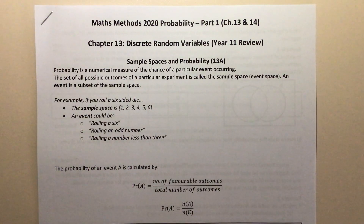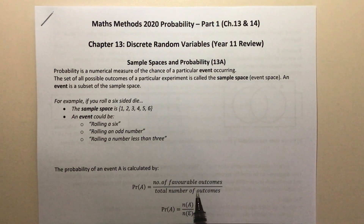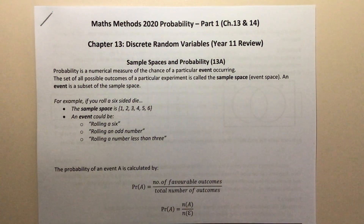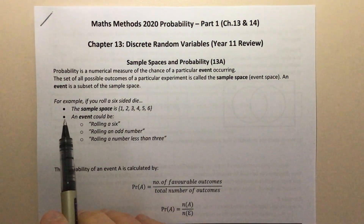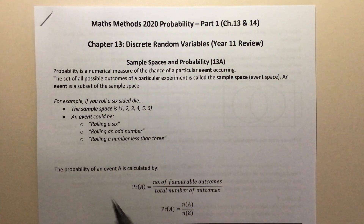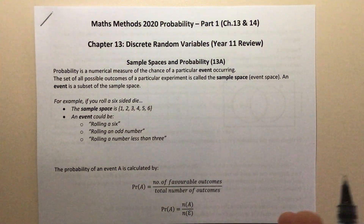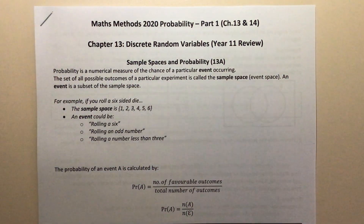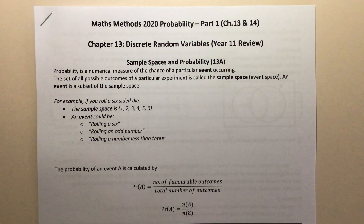The first thing we're going to talk about with probability is the idea of events occurring. An event is just something that can either happen or not happen. Probability is really a numerical measure of the chance of that event happening. Probabilities are always a number between 0 and 1 — the smallest possible probability is 0, the greatest is 1 — and they can be represented as decimals, fractions, and percentages.